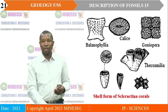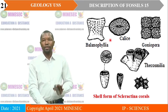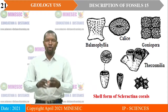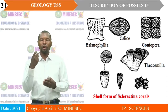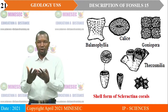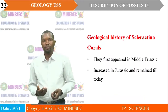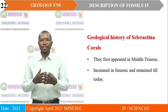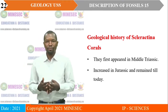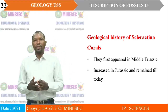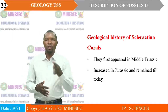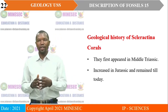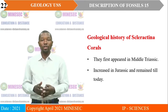These are the common shell forms: Balanophyllia, Goniopora, and Thecosomilia. Note should be taken that these drawings are in the standard position, so each time you want to draw, you must follow this order of drawing. The geological history of Scleractina corals: they first appeared in the Middle Triassic, then increased in the Jurassic, and remained till today.